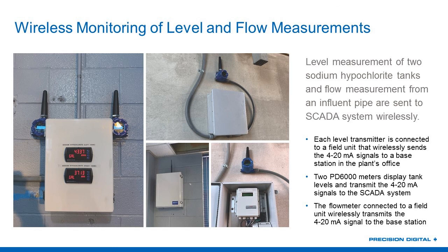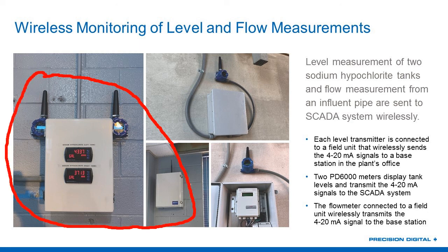Joe and I have both talked a little bit about our wireless system, our PDW-90, which uses 900 megahertz frequency hopping spread spectrum. In this particular application, these two pictures are level applications — we've got two sodium hypochlorite tanks where some type of level transmitters are monitoring the level, reading out in gallons. That 4 to 20 also goes to our field unit — here's the field unit for one sodium hypochlorite tank, and here's the other one.